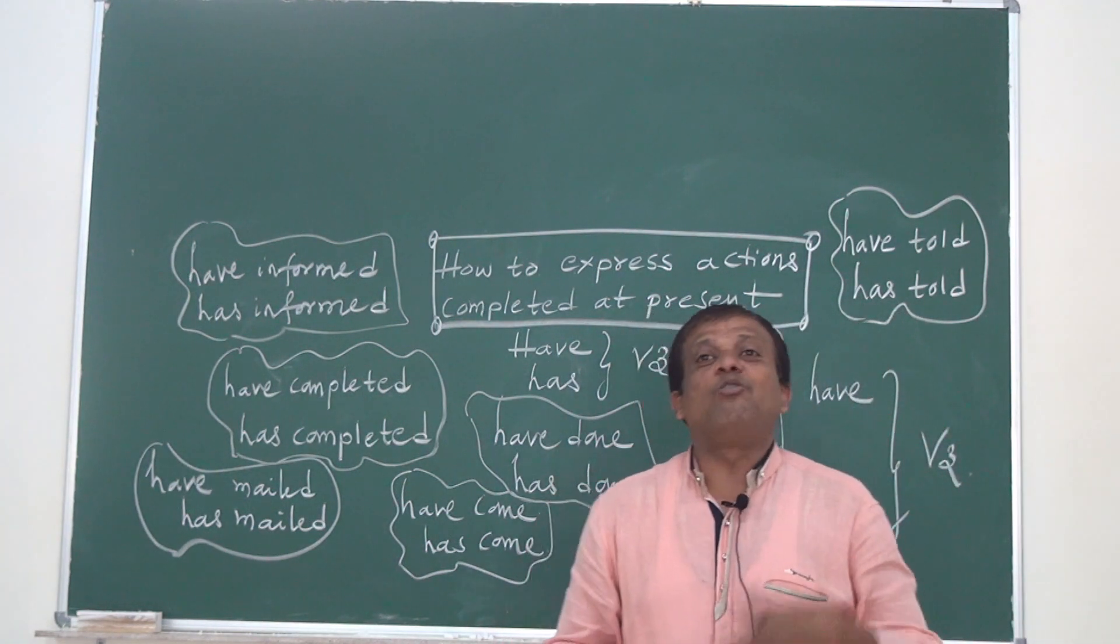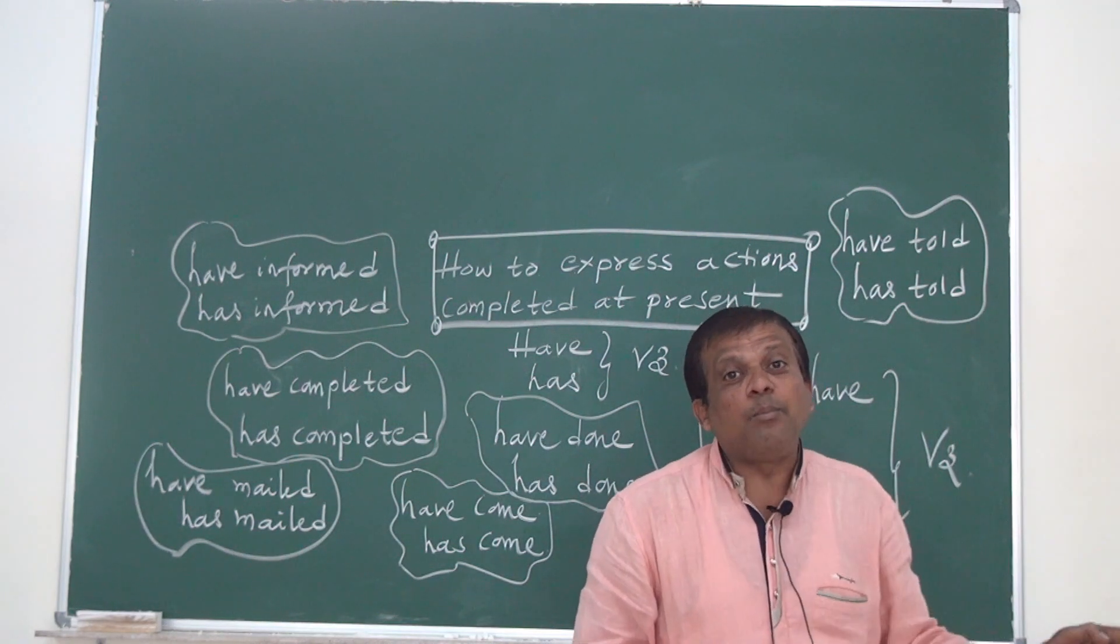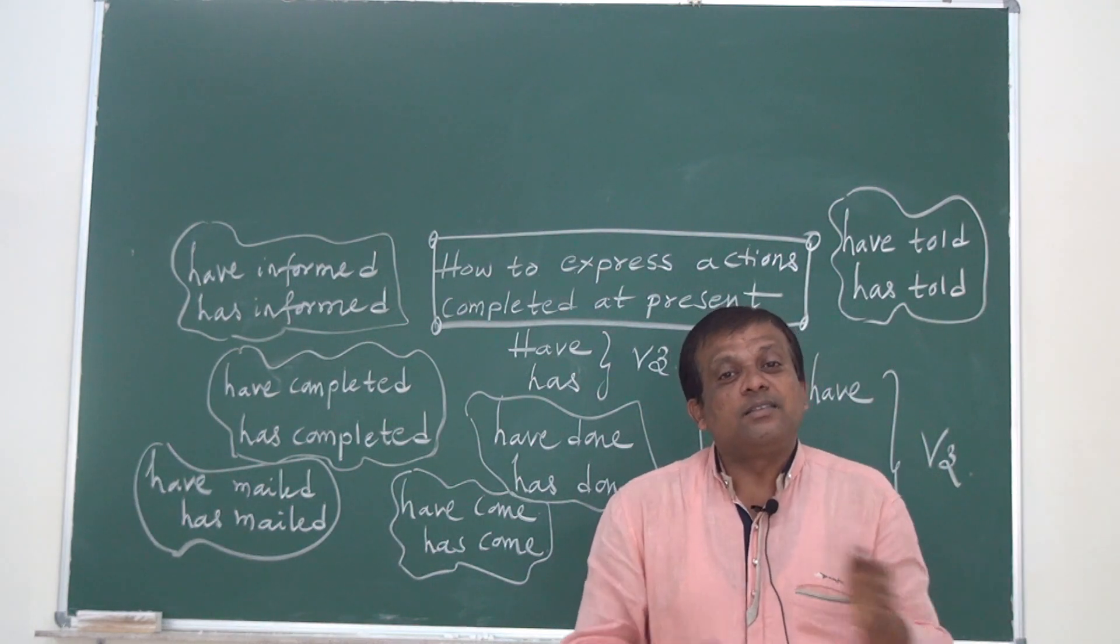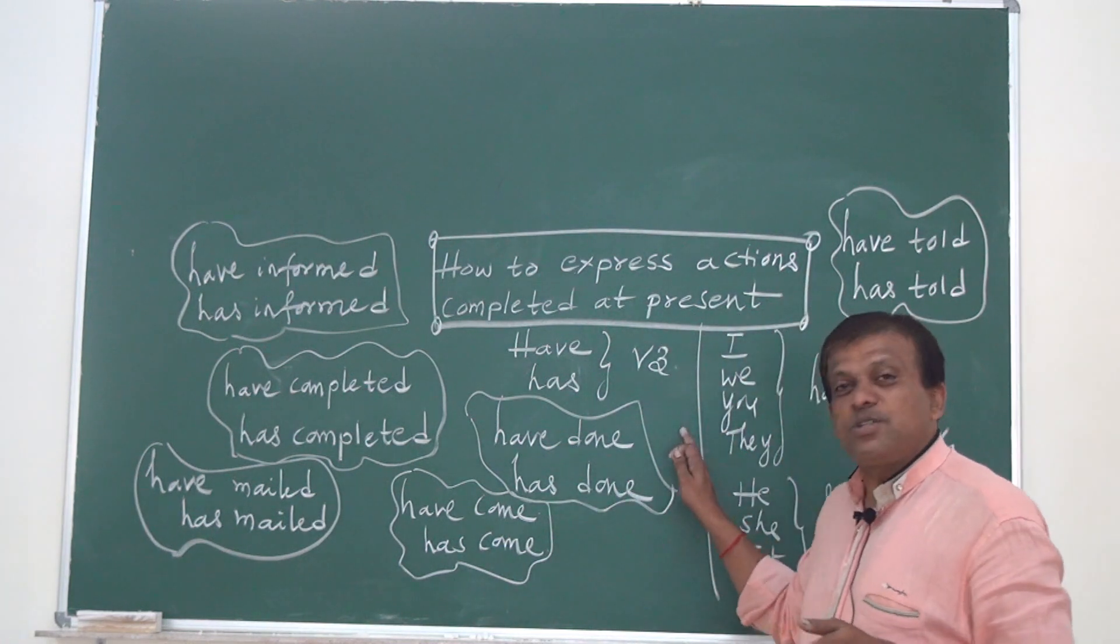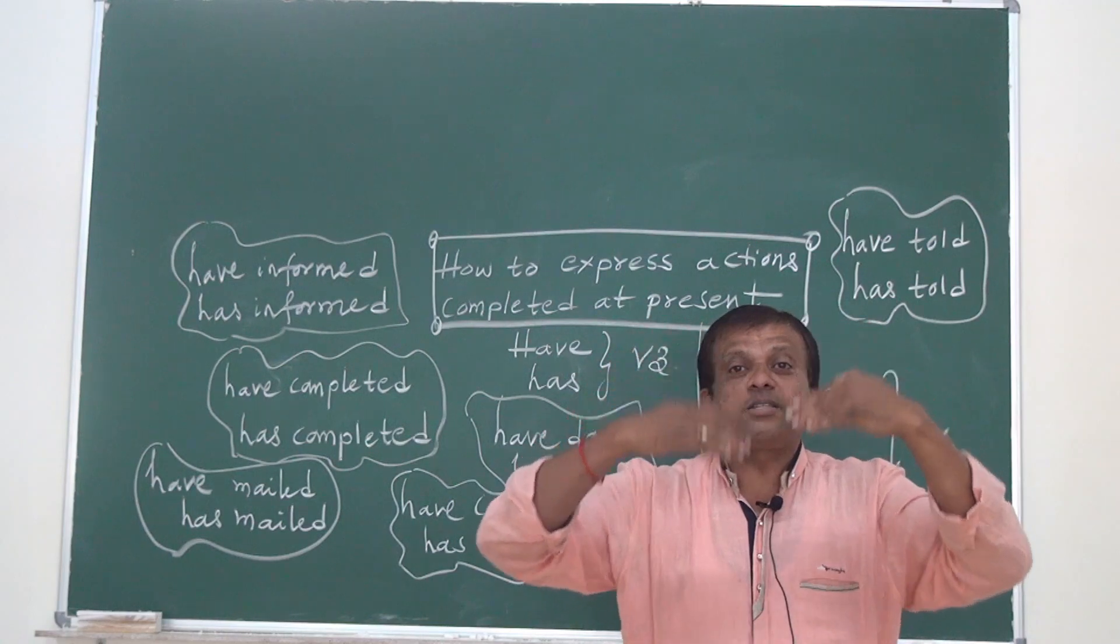Like for example, some say, I have went. She has came. Wrong sentence. She has come. I have gone. Now, this is how you use has and have with V3 for completed actions at present.